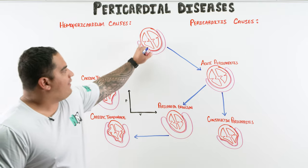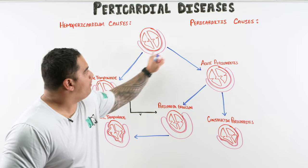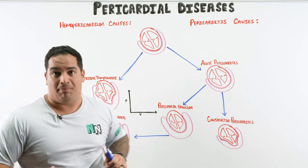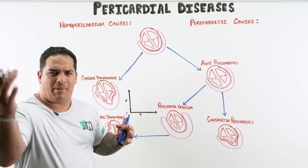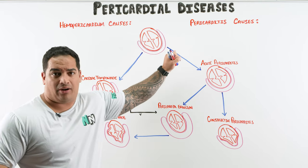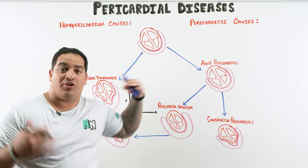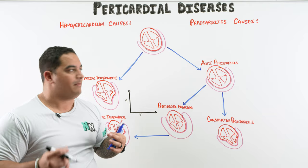Here we have a heart with the normal pericardium shown in pink. This is a double layer — you have the visceral layer and the parietal layer, and then the pericardial cavity filled with serous fluid in between.